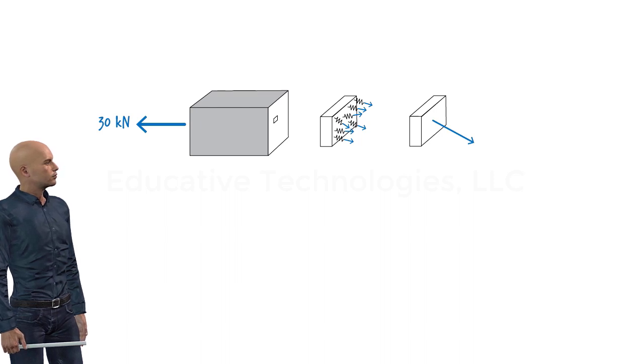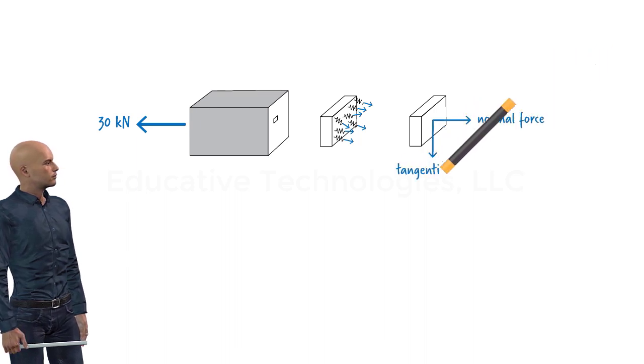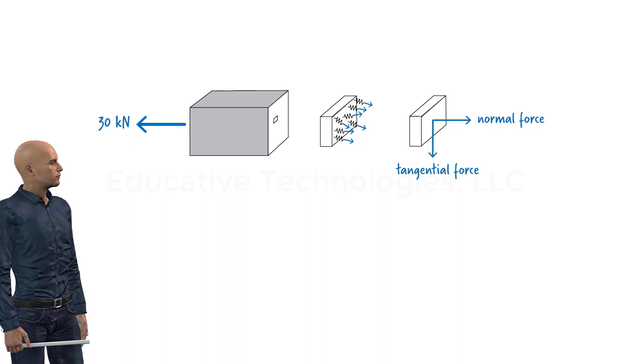However, given the two-dimensional nature of the truss, we treat the force as a 2D vector with a normal component and a tangential component. Note that the normal and tangential directions of the force are specified relative to the cross section of the member.